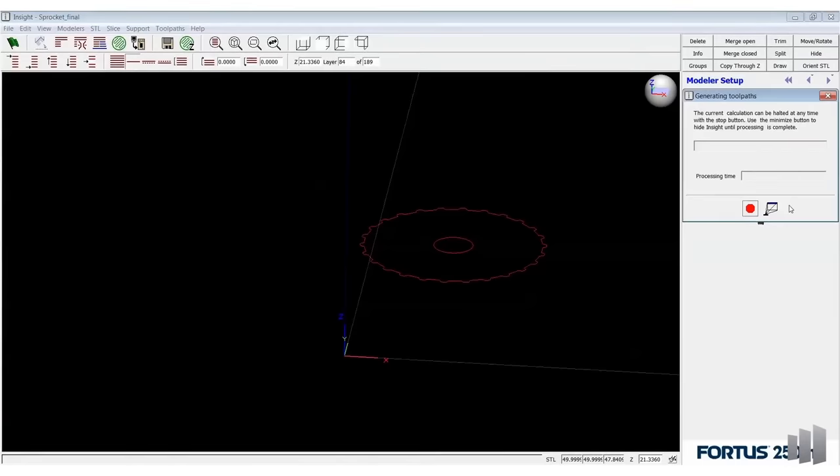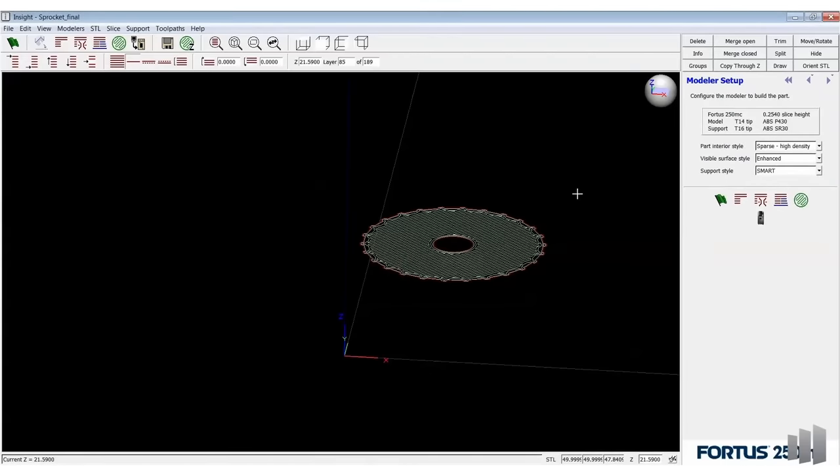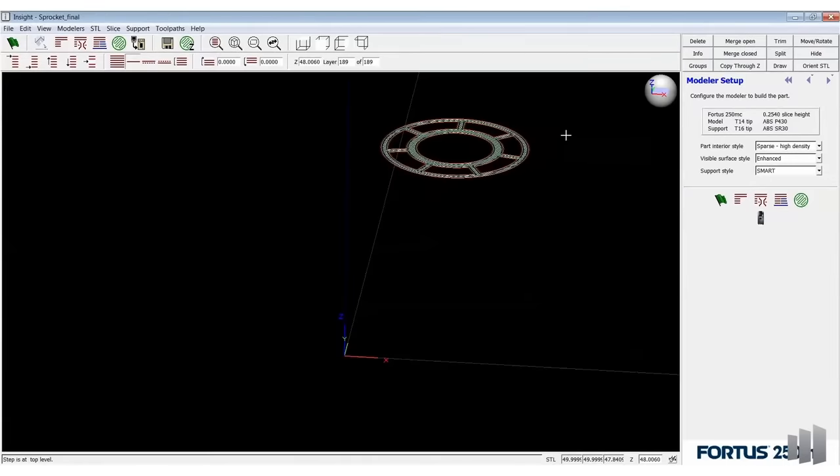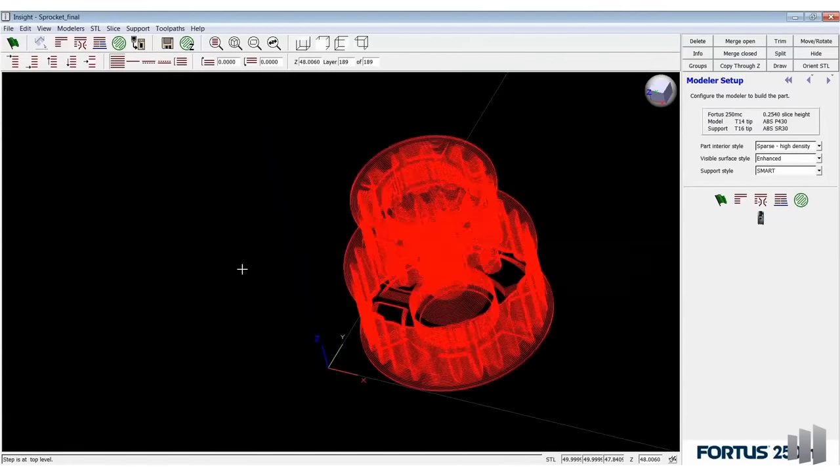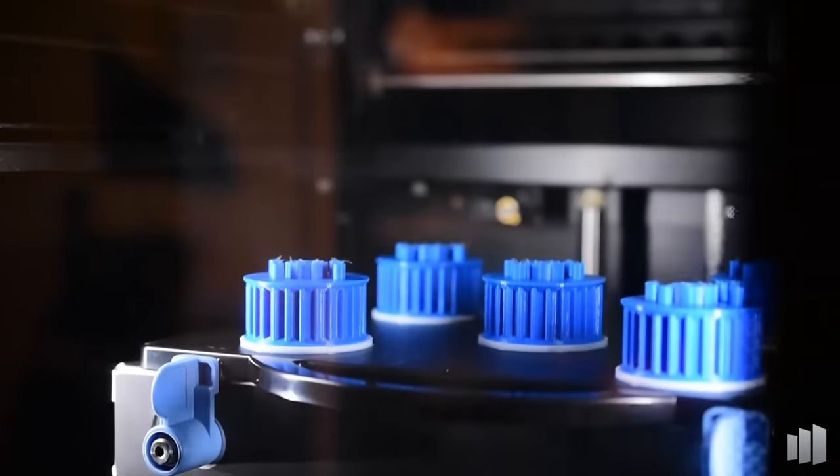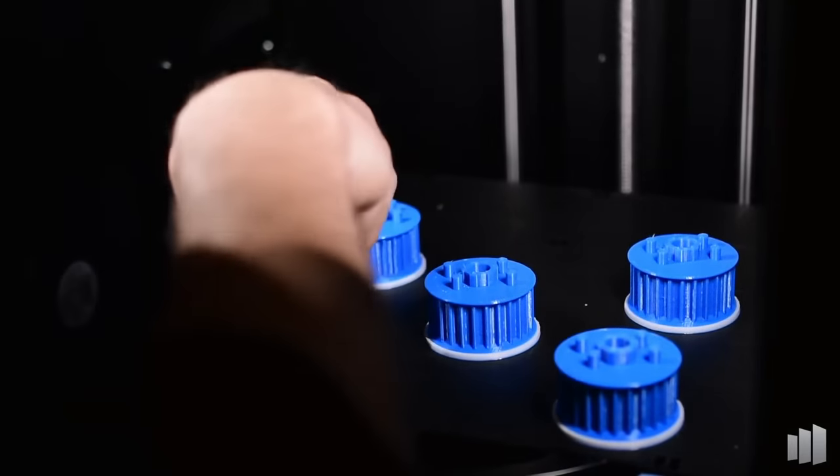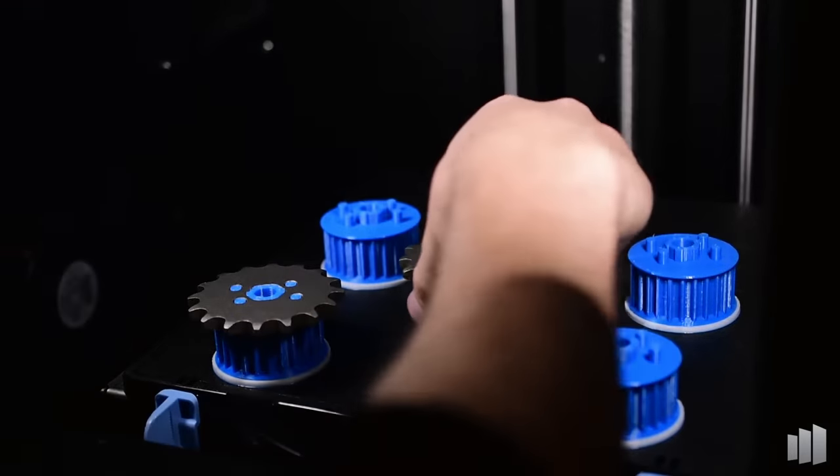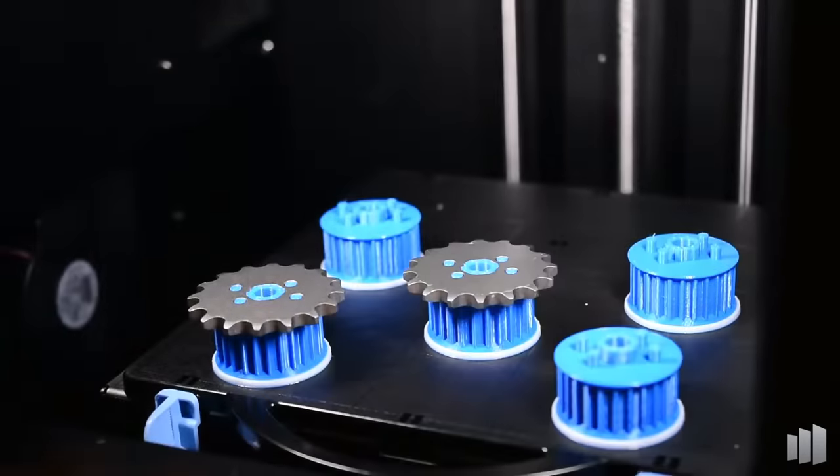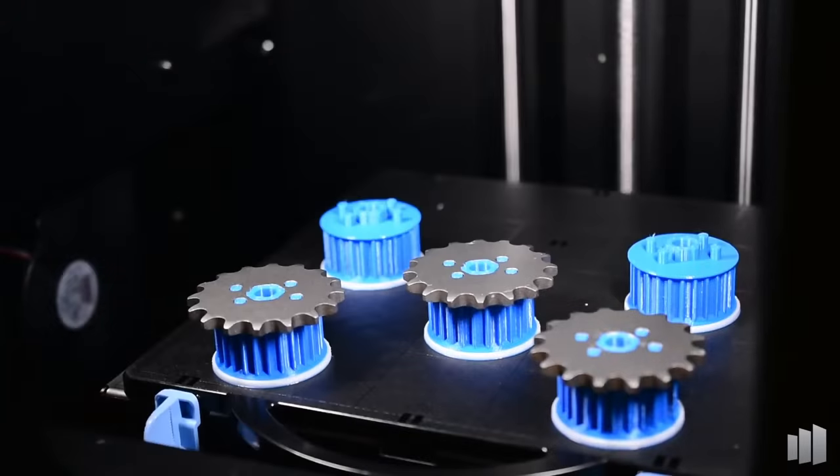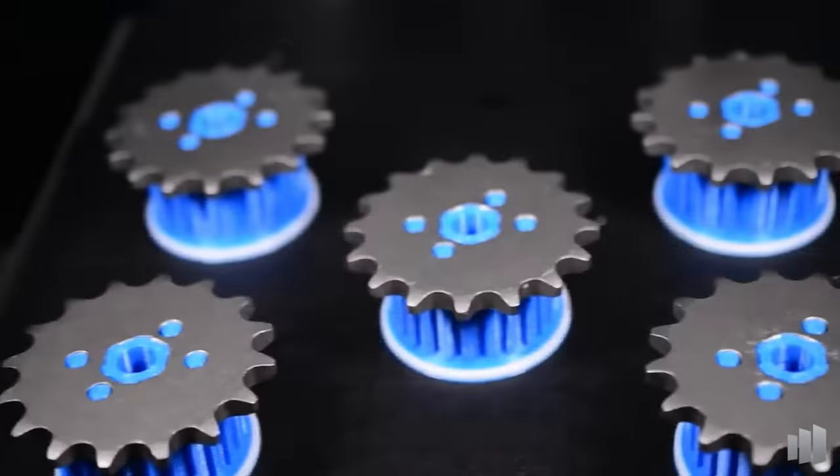Now what makes this all possible is Insight software that powers Stratasys Fortis level machines. Going from CAD into Insight, I have full control over all the build parameters of my part. With this, I'm able to remove support material and insert predetermined pauses into the build. Send that to the printer and we're on our way to creating a part that encapsulates several pieces of hardware and design elements into one cohesive part. A small assembly that would otherwise have taken lots of waiting, machining, and assembling can now be built unattended on an FDM 3D printer.